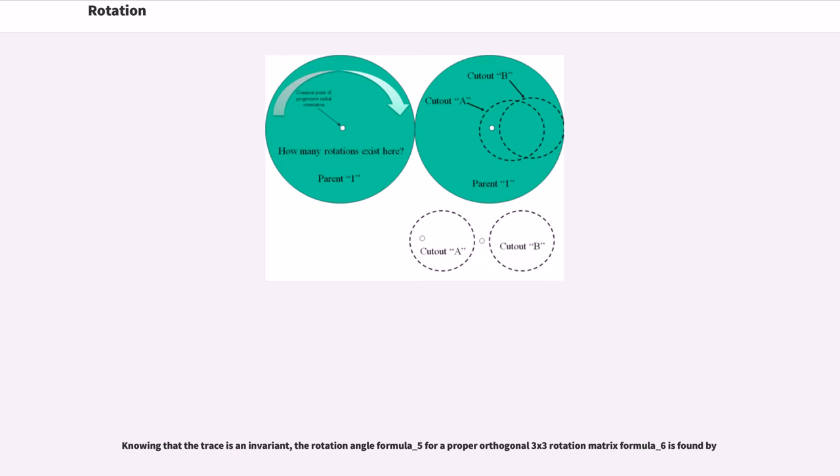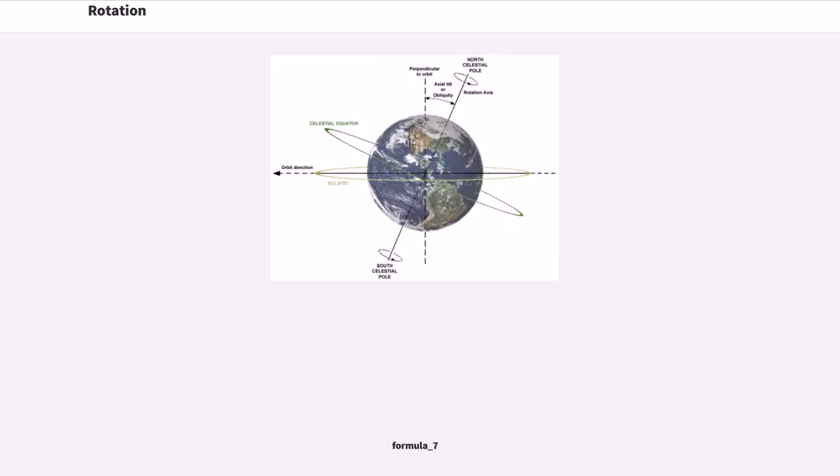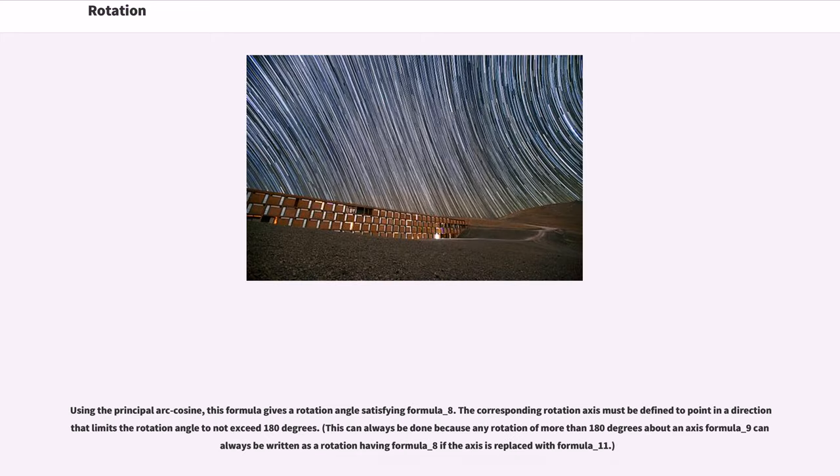Knowing that the trace is an invariant, the rotation angle for a proper orthogonal 3 by 3 rotation matrix is found by using the principal arccosine. This formula gives a rotation angle satisfying the constraint. The corresponding rotation axis must be defined to point in a direction that limits the rotation angle to not exceed 180 degrees.